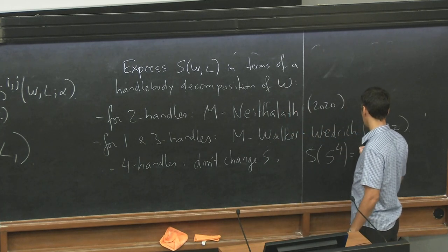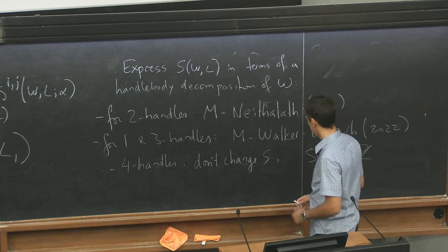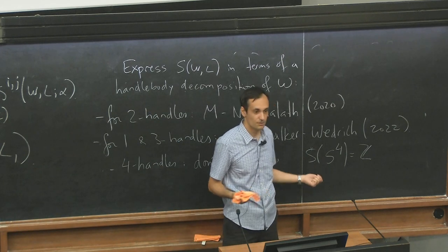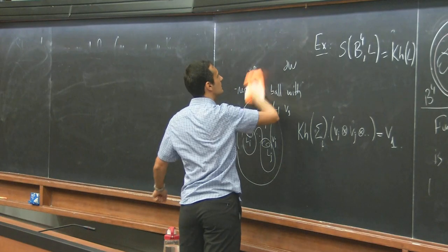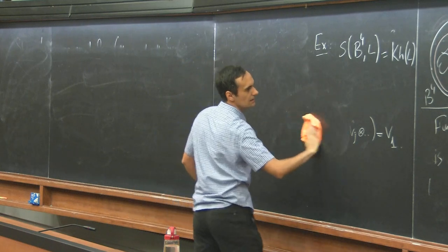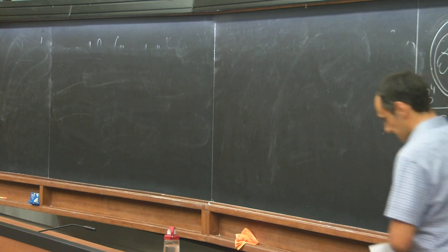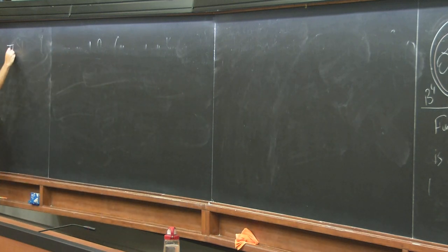So, okay, four handles don't change. For example, this is easy to see, like S of S4 is still. Oh, by the way, when I don't mention, sorry. So, in particular, I can do this invariant for closed four manifolds and then the link has to be empty because there's nothing in the boundary.